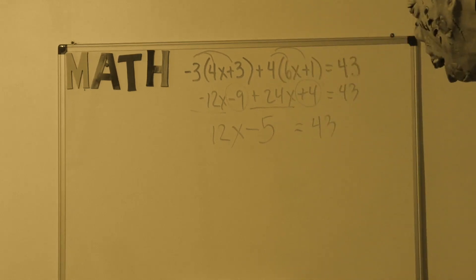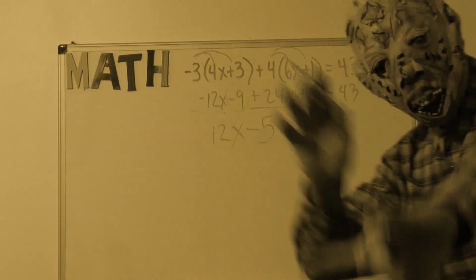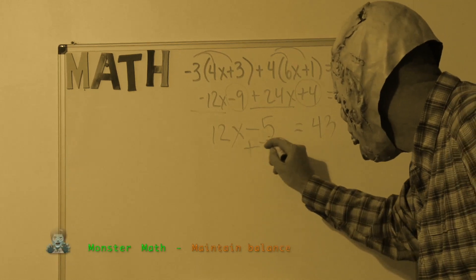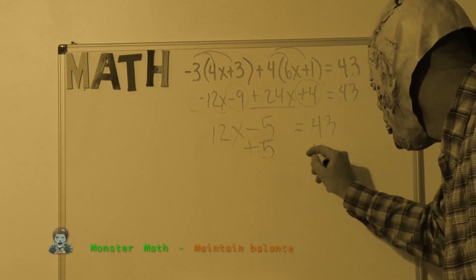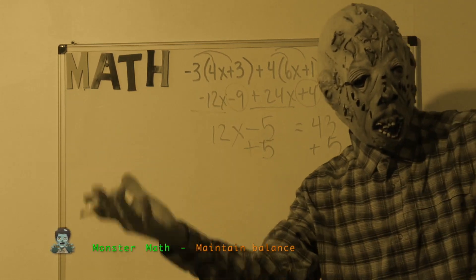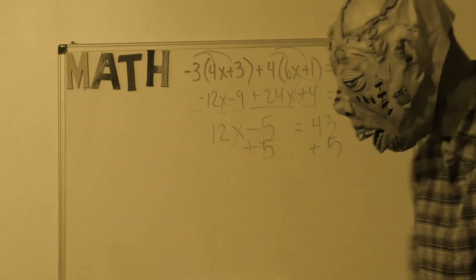Now I am left with a two-step equation. It is important to maintain balance. So I do the same thing to both sides of the equation by adding 5.